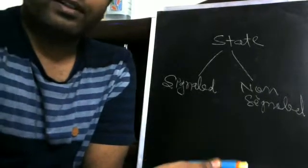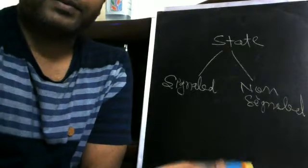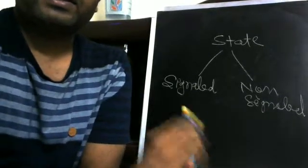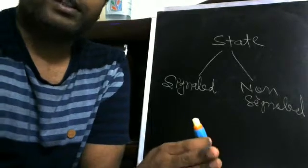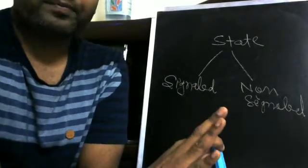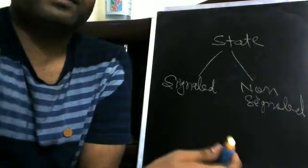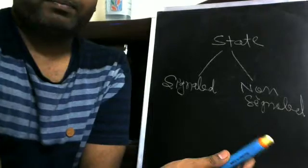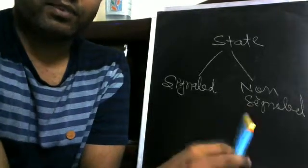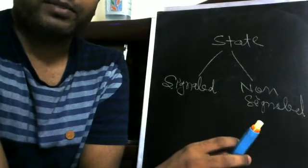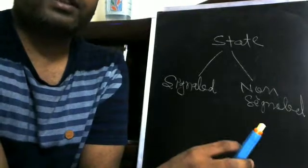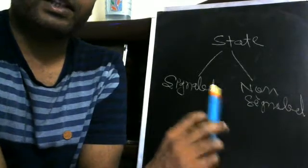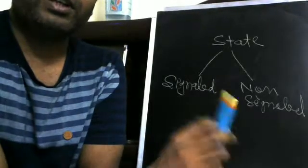Synchronization means that if some application is working on a resource that only one thread can access at a time, the other thread should not disturb that resource until the first is done. For example, consider a single printer where only one print job can be processed at a time. If one thread is printing and another also wants to print, only one can proceed and the other must wait.